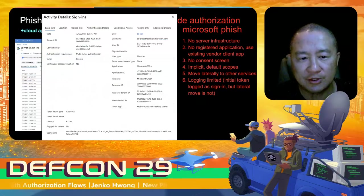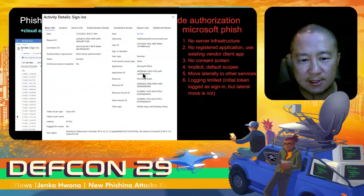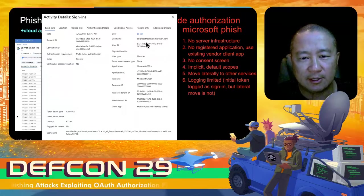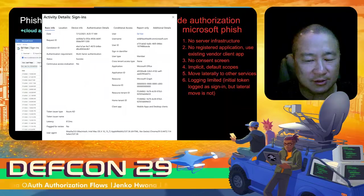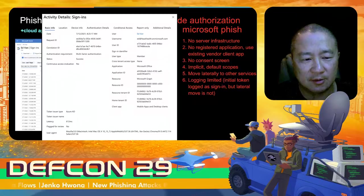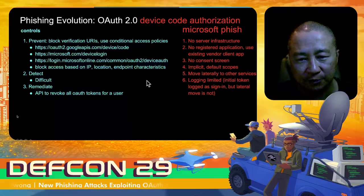Here are some details in that log entry — the application ID is shown, but not much else. We know which user performed this action: the attacker did the retrieval of OAuth tokens for Ed, but this just looks like an Ed action. Nothing identifies the attacker other than the IP address, which can easily be obfuscated through a proxy or VPN.